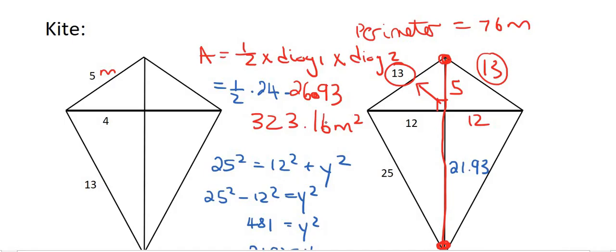And there we have it, guys. We've looked at the area of a trapezium and a kite. And we also looked at the perimeter, but that's easy. All right, guys. Thank you very much.